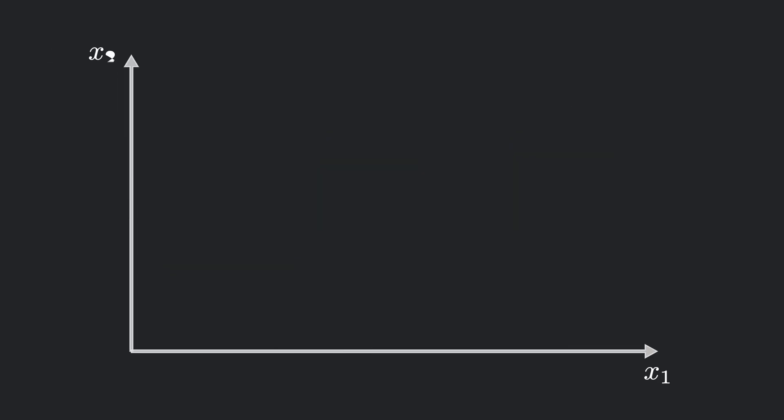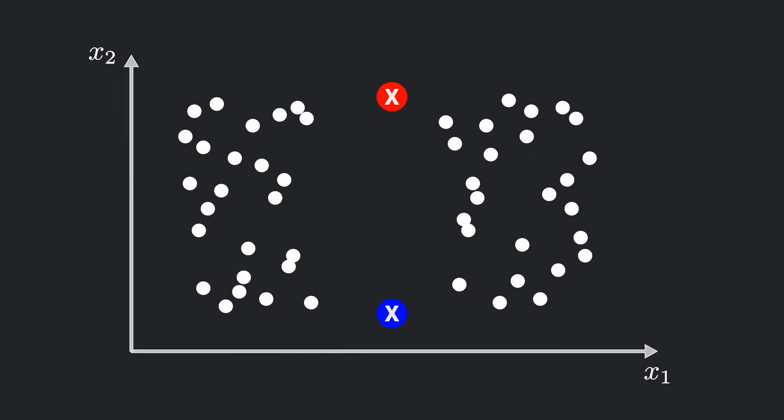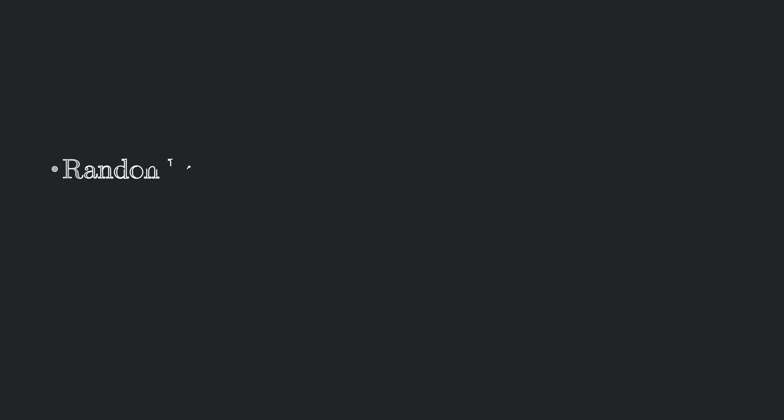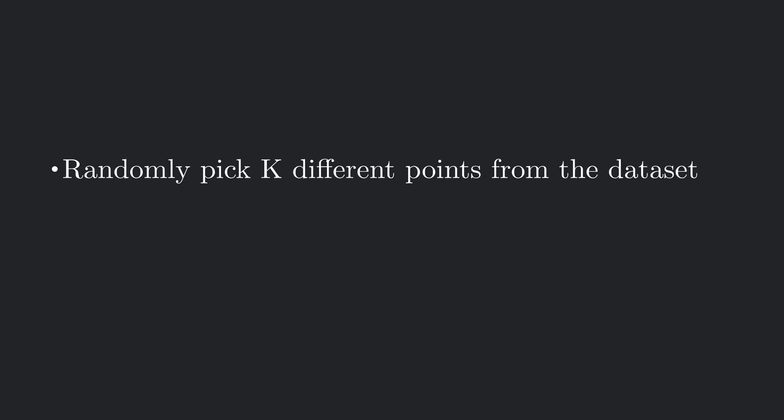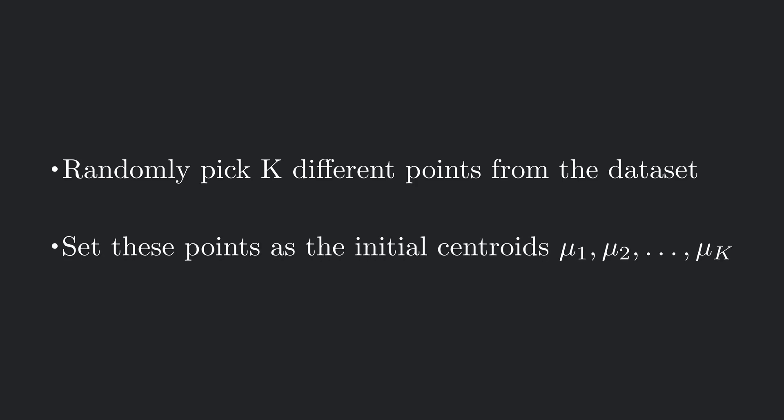In the animation at the start of this video, I randomly placed the centroids anywhere on the screen. But in practice, we rarely do that. Instead, a common approach is to randomly select k data points directly from the dataset and use those as the initial centroids. This way, the centroids start at positions that already lie within the data distribution, which usually leads to faster convergence and more meaningful clusters compared to placing them completely at random.